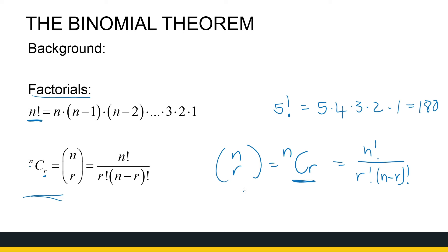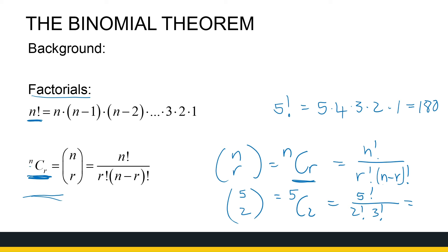What it means is n factorial over r factorial times n minus r factorial. For example, if I've got 5 objects, how many ways can I choose 2 objects out of 5? 5c2 is 5 factorial over 2 factorial times 3 factorial. Your calculator has a button for ncr, so please feel free to use that — you do not have to use the formula to calculate ncr. Same with factorial, there is a button on your calculator for it.